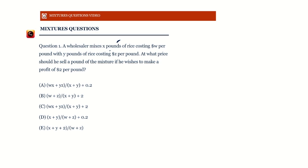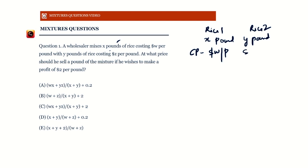I'm adding x pounds of rice 1 with y pounds of rice 2. The cost price of rice 1 is dollar w per pound and the cost price of rice 2 is dollar z per pound. When adding these two kinds of rice, I'll get an average cost price for the mixture using weighted averages.